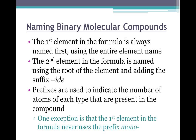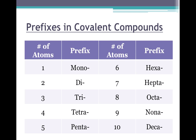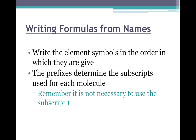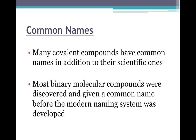The difference with covalent is that subscripts are very important — you're going to use prefixes to indicate the subscripts. The only difference is if the first element in the formula has a subscript of one, you never start the name with mono; you just eliminate that prefix. The covalent prefixes are: mono, di, tri, tetra, penta, hexa, hepta, octa, nona, deca. You will be given these. To write formulas from names, you write the element symbols and use the prefixes to figure out the subscripts.